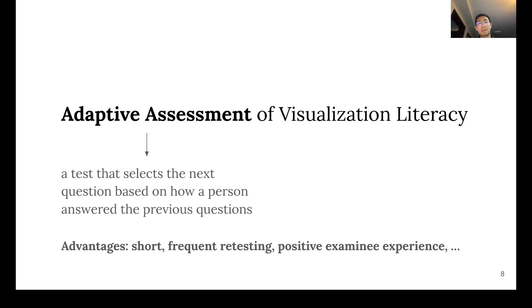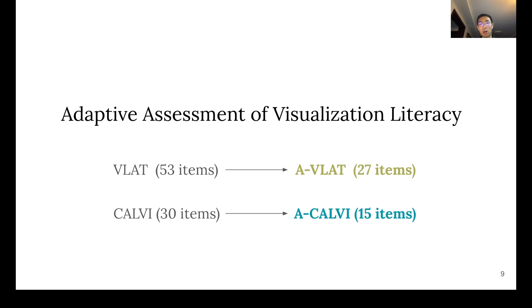Adaptive assessment has many advantages over conventional static assessments. They're shorter and similarly precise, they allow for frequent retesting, and they create positive examining experience. In this project, we developed two adaptive assessments, A-VLAT and A-CALVI, for two aspects of visualization literacy. Our adaptive assessments are based on existing static assessments, VLAT and CALVI, and the length of our adaptive assessments are half of their original counterparts.